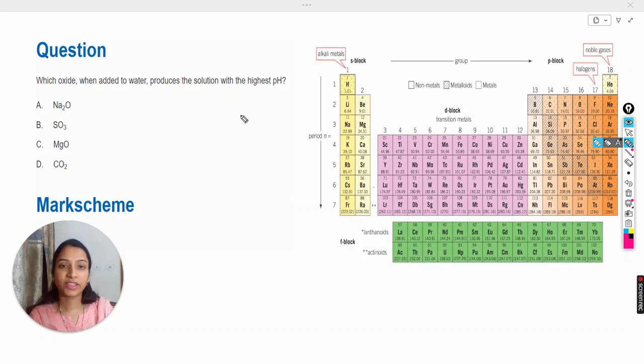Hello dear students, in this video we will solve this question from the topic periodicity. The question is: which oxide, when added to water, produces the solution with the highest pH? Here we have to check the options.